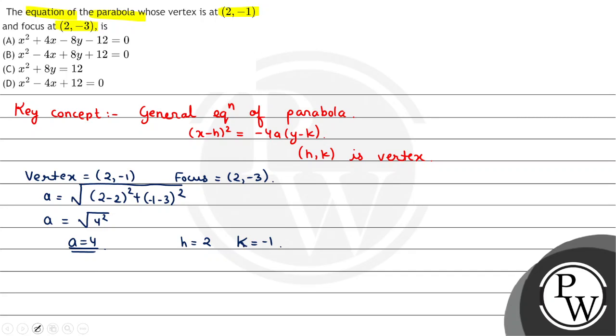We can write (x - h), that is (x - 2)² = -4a, so a is 2, so -4 times 2 is -8, times (y - k), so (y - (-1)), which is (y + 1). This becomes x² - 4x + 4 = -8y - 8.